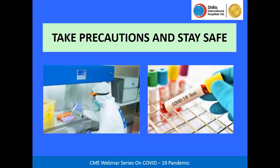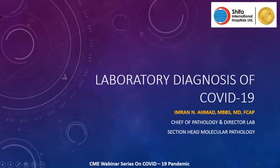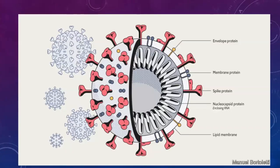I'm going to talk about the laboratory diagnosis of COVID-19. Starting with the structure of this virus: as the name suggests it is crown-shaped and it is an enveloped virus with different proteins, some embedded in the membrane and some within the nucleus. These are all targets for diagnosis as well as for treatment purposes, with a lot of research going on to block the virus by targeting these proteins.